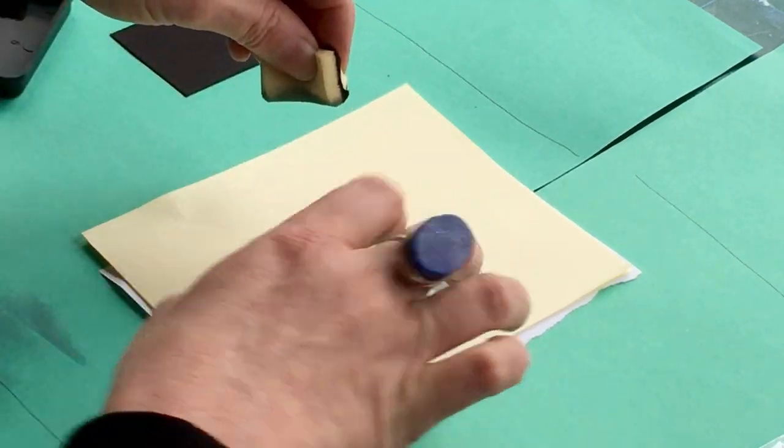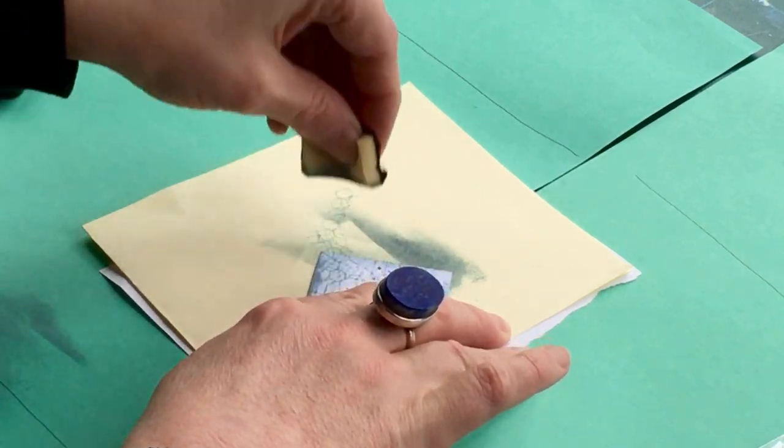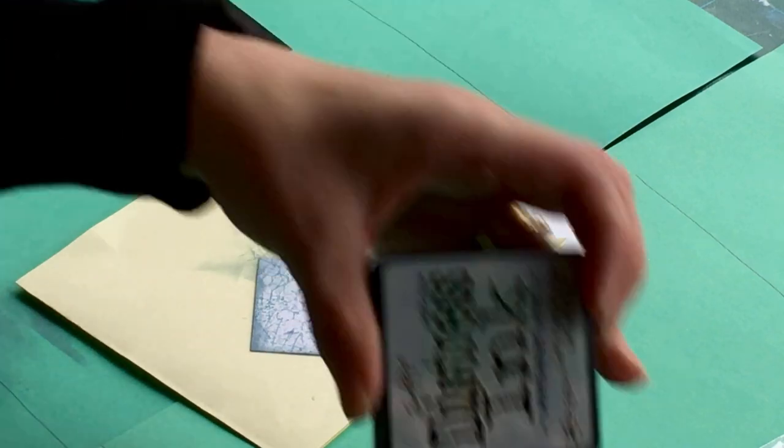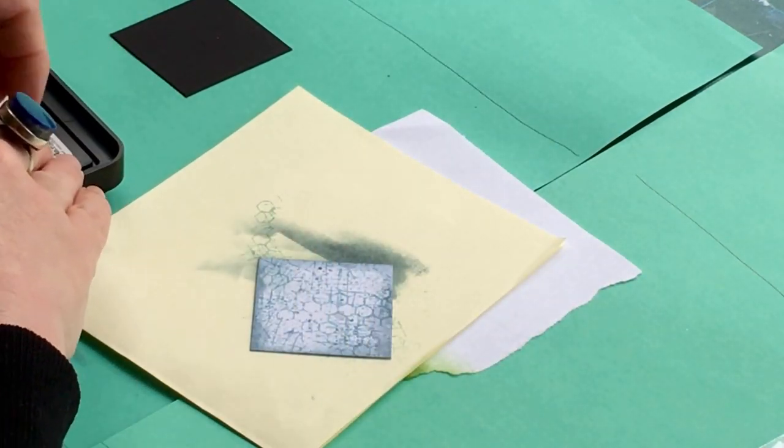I've got a little bit of white space where my background off the block hadn't reached the card. There we go, that's that. Put my little sponge on there so I don't lose it.